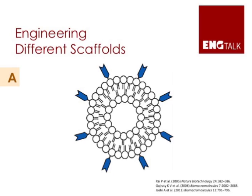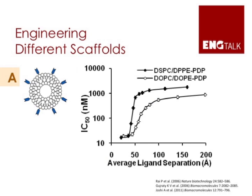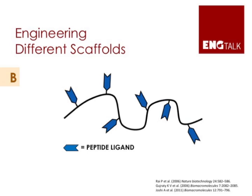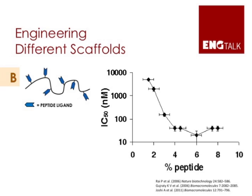We have gone on to design such inhibitors based on a variety of other scaffolds. The first is a vesicle or liposome — a spherical shell enclosing water — where we decorate the outer surface with multiple copies of a peptide, and by tuning the density of peptides on the outer surface, we can once again increase the activity of the peptide by several orders of magnitude. The next approach uses a linear polymer as the scaffold — think of it as a strand of spaghetti decorated with multiple copies of the same peptide — and by tuning the density or number of peptides per polymer chain, we can greatly enhance the activity of our molecule.